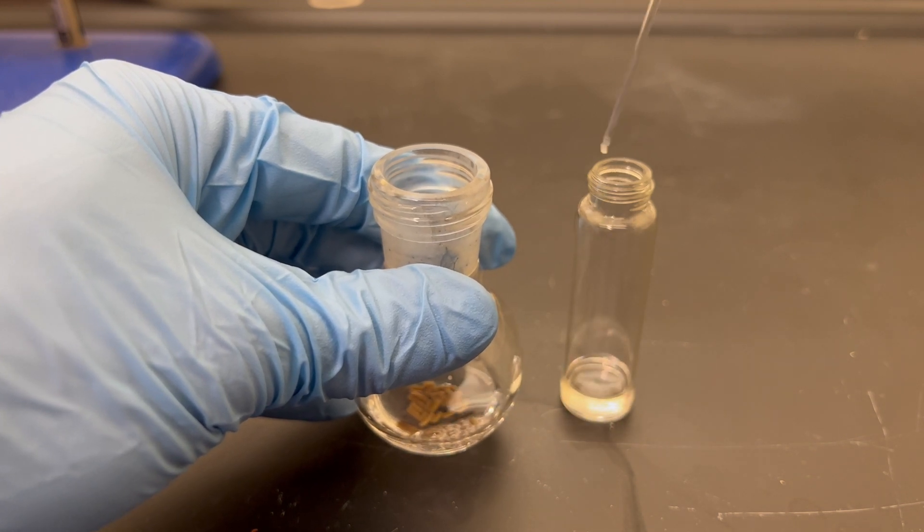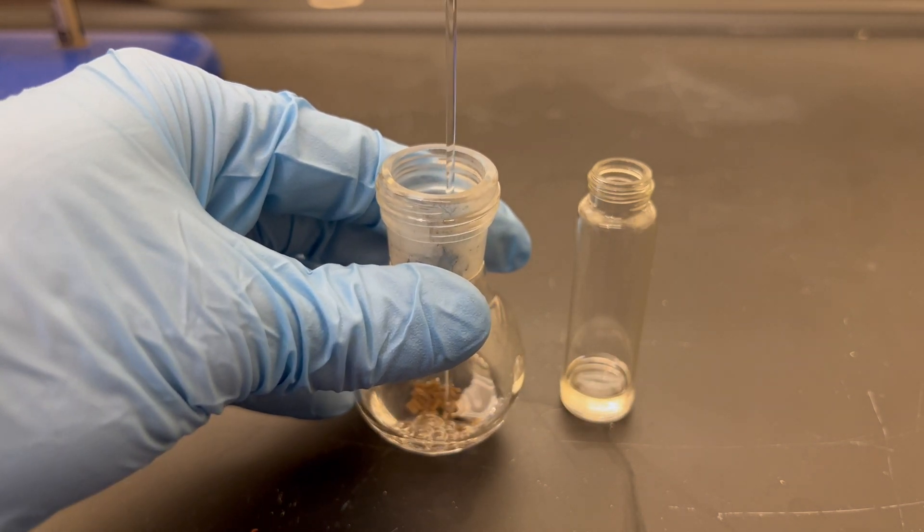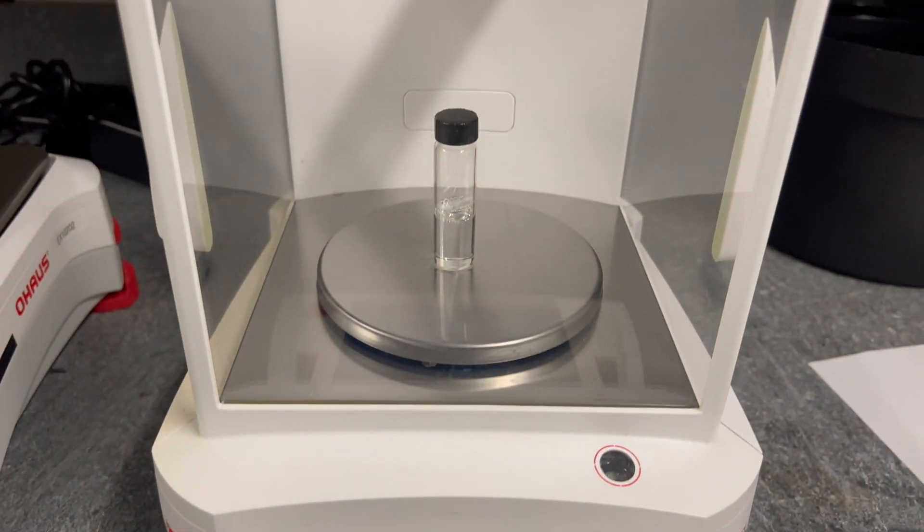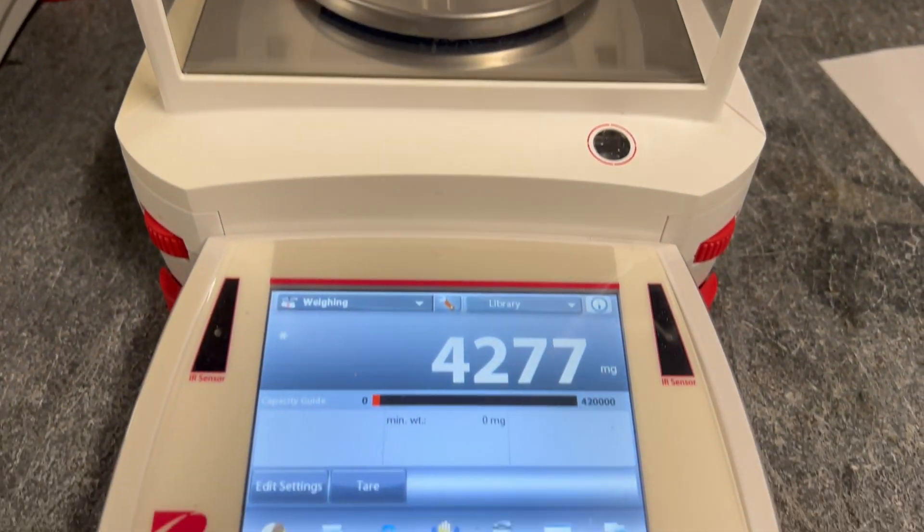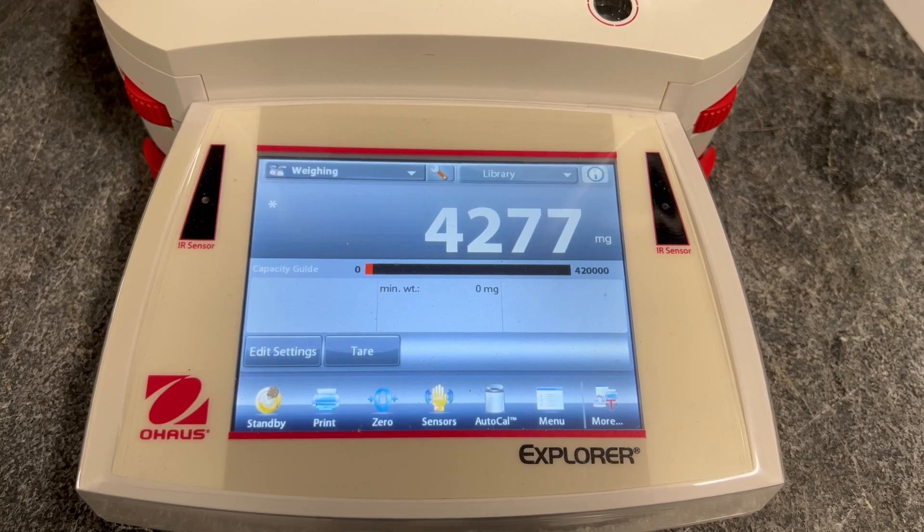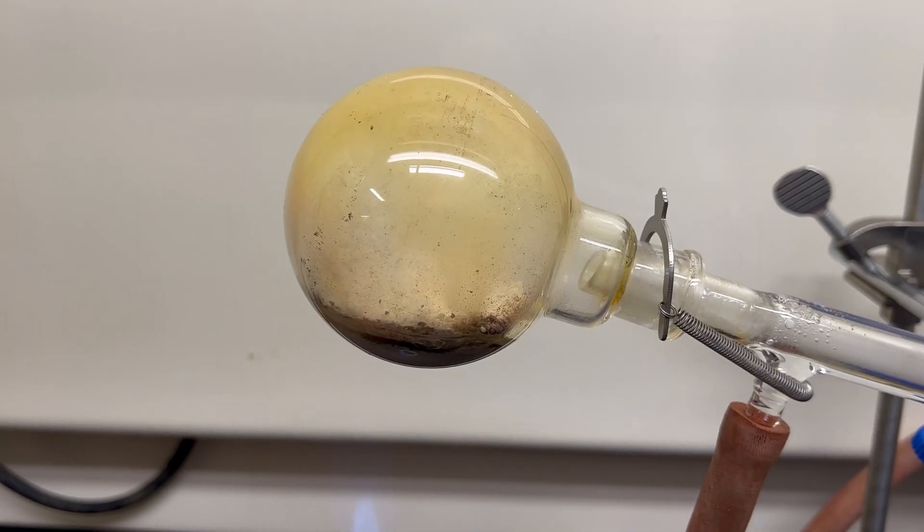The now-dry benzene is transferred to a tared vial. The yield is 4.277 grams, a 55% yield. Low yields such as this are common for this reaction style. It produces many byproducts instead of pure product.